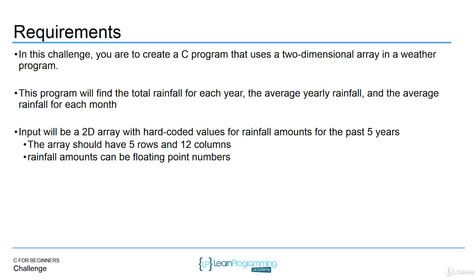The input is going to be a two-dimensional array with hard-coded values for rainfall amounts for the past five years. You should create a 2D array that has five rows and 12 columns. The rows represent the past five years and the columns represent the months — so how much rain you got in January, February, March, April, for each year.